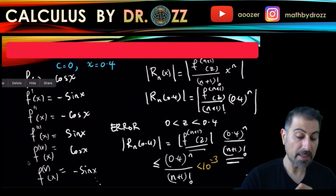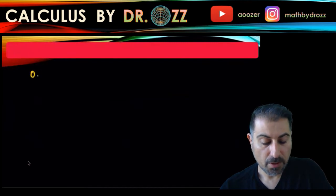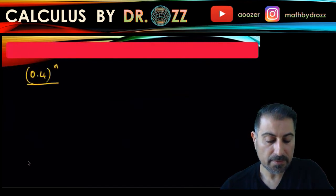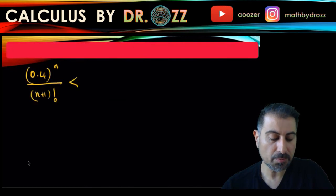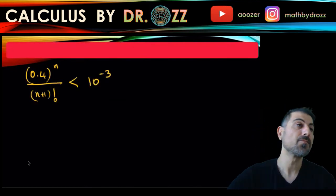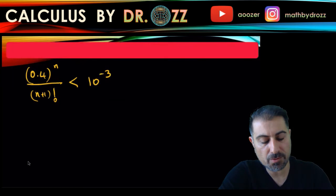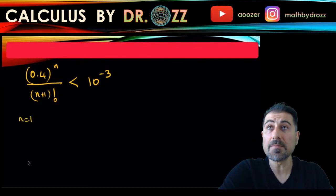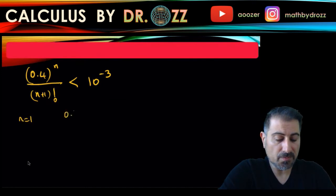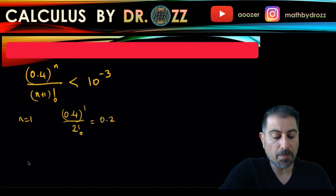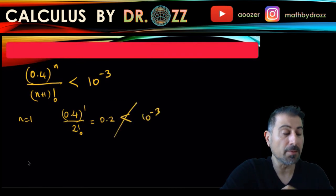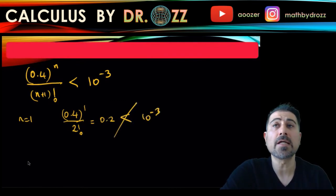All right, so now we're going to have a trial error type section here, so 0.4, 0.4 to the n, n plus 1 factorial has to be less than 10 to the minus 3. You can try n equals 1. This is the best time, in fact, to have your calculator ready. So this is 0.4 to the 1 divided by 2 factorial, so it's 0.4 divided by 2, so 0.2. Well, 0.2 is not less than 10 to the minus 3, so n equals 1 is not a good choice.